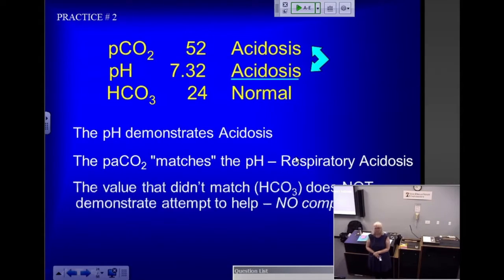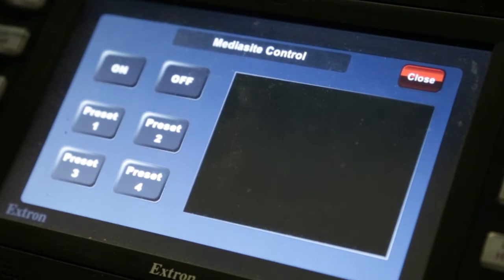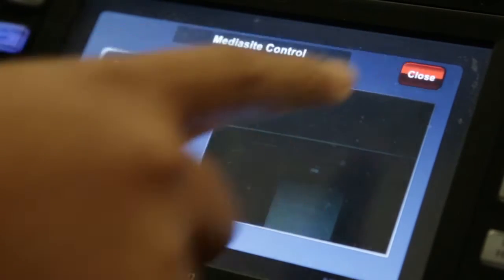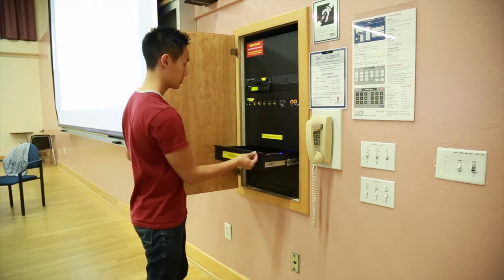The room is now ready to record your scheduled lecture. After you've finished your lecture, press the off button to turn the Mediasite camera off. Close Mediasite to return to the home page. Please turn off and return the wireless microphone to the AV cabinet.